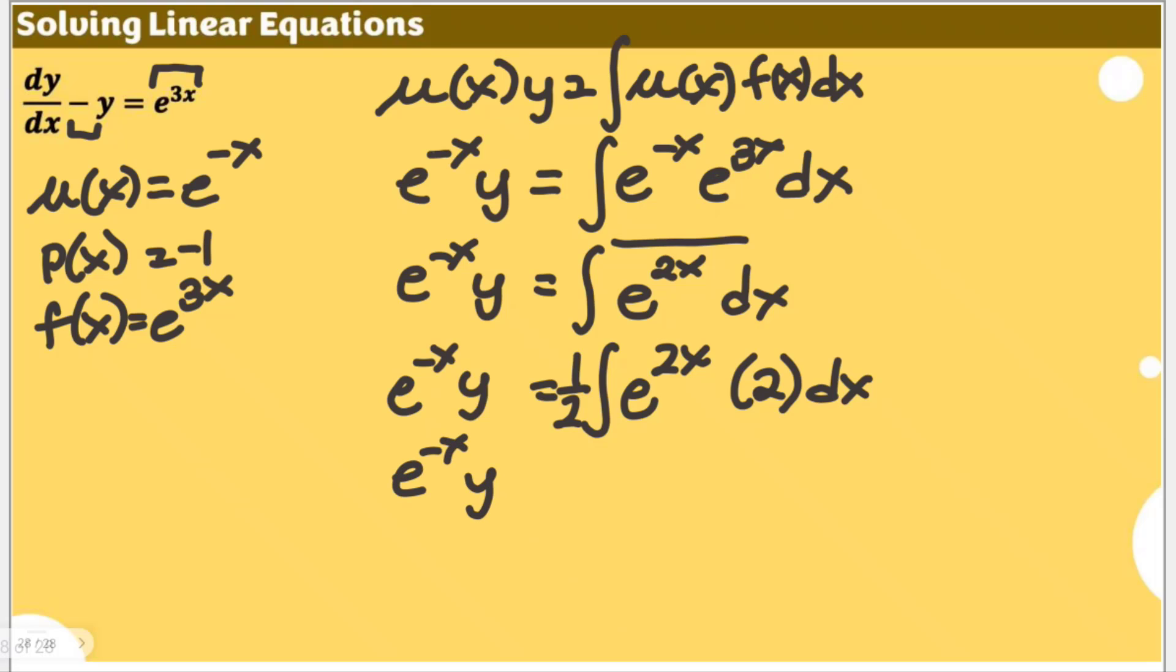So with that, e to the negative x, y is now equal to 1 half. And the integral of this expression, you have e to the power of 2x, then plus c. We have plus c now.